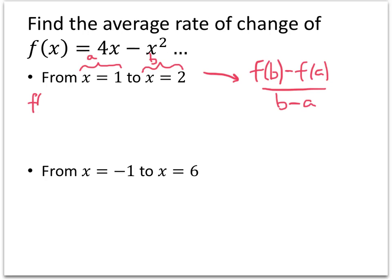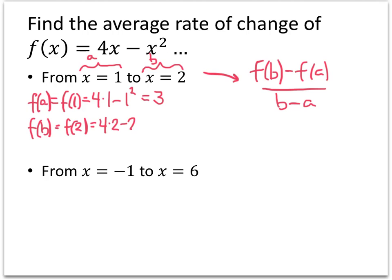So let's do that. f(a) is f(1), and f(1) is going to be 4 times 1 minus 1 squared, which works out to be 3. f(b) is f(2), so that'll be 4 times 2 minus 2 squared, which works out to be 4. So now all I have to do is plug everything into my formula. f(b) minus f(a) is 4 minus 3 on the top, and b minus a on the bottom is 2 minus 1. Notice that I kept my order the same — f(b) got written first on the top, and b got written first on the bottom.